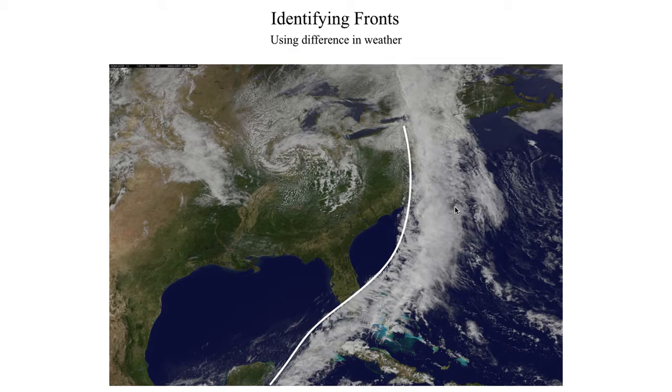The most reliable methods are either the isobar method or the temperature gradient method — looking for a strong temperature gradient and also looking where the isobars dip to a region of relatively lower pressure; that point marks where the front is. Well, that's going to do it for this segment on identifying fronts. We still have one more segment left, and in that final segment we'll get into the mathematics of fronts — so that had to happen eventually. I will see you all there.